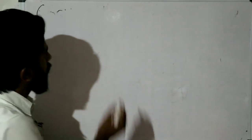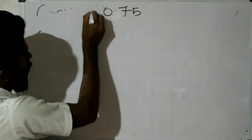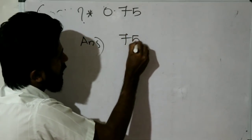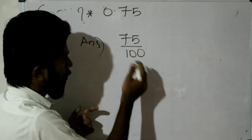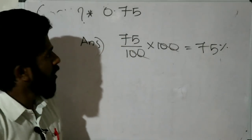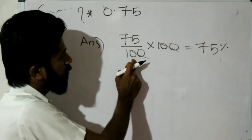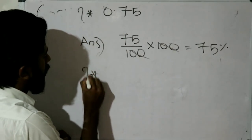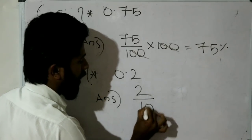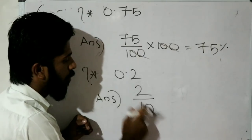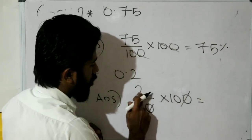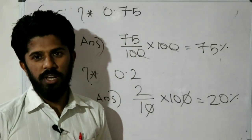Now converting decimals to percentages. 0.75 — understanding: 75 divided by 100, so the answer is 75 percent. Second question: 0.2. 0.2 into 100 — cancel: 2 into 10 is equal to 20 percentage.